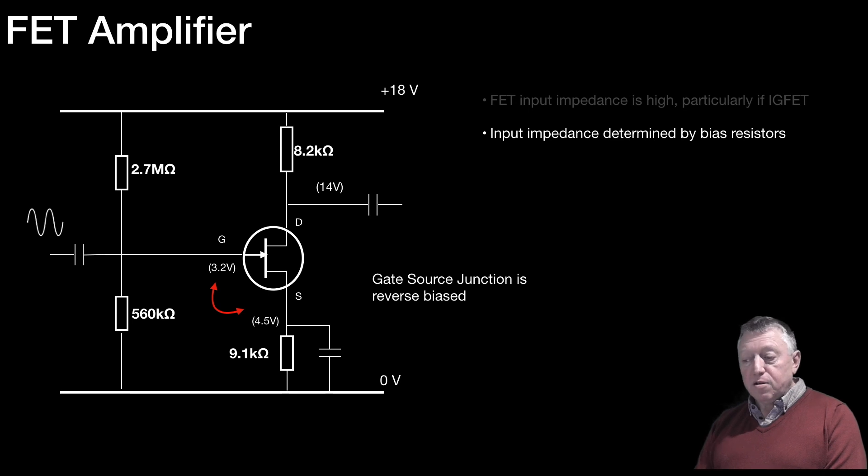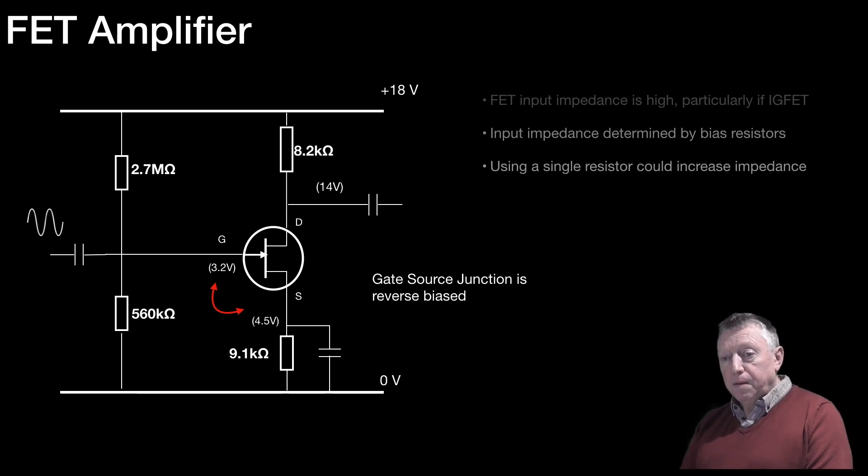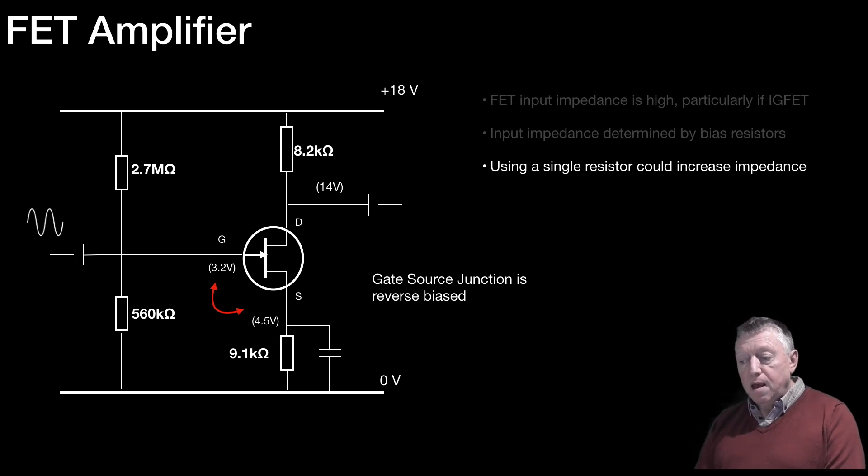So that's, in this case, a 2.7 megaohm resistor and 560 kiloohm resistor. That is actually determining the input impedance, rather than the device itself. So, using a single resistor could increase impedance. Now, we can have a single resistor going back from the drain to the gate, and that may provide the appropriate biasing, but give a higher impedance, then, to the input circuit.